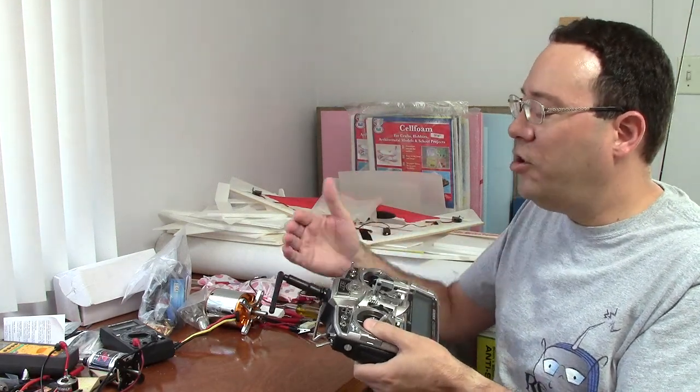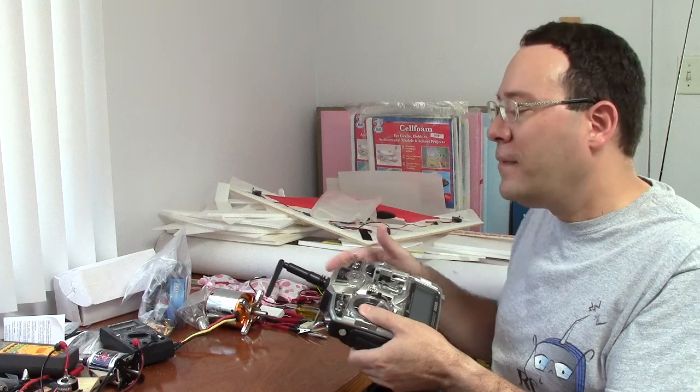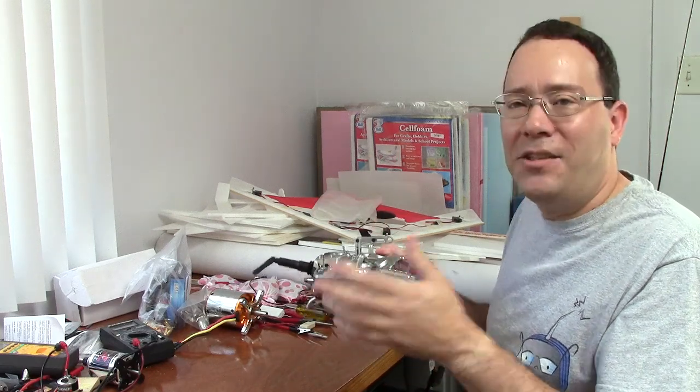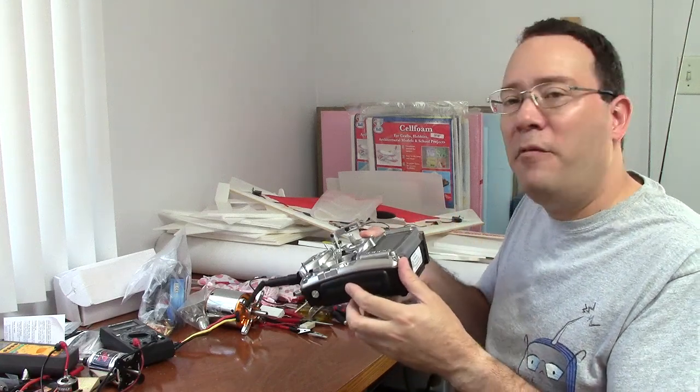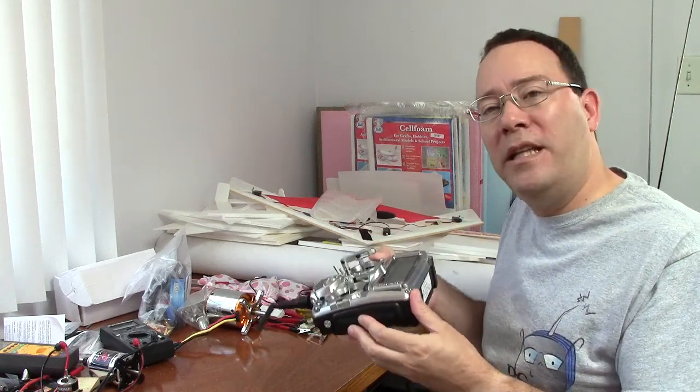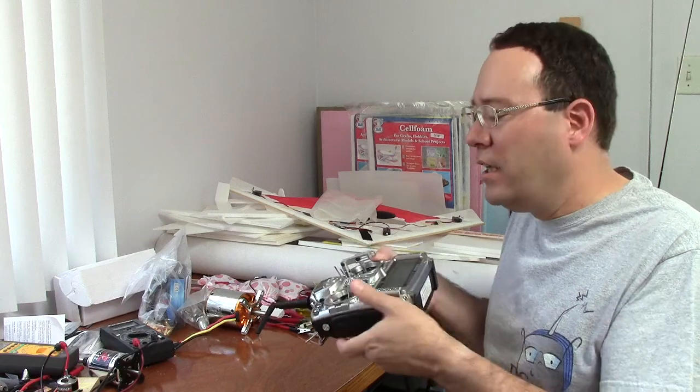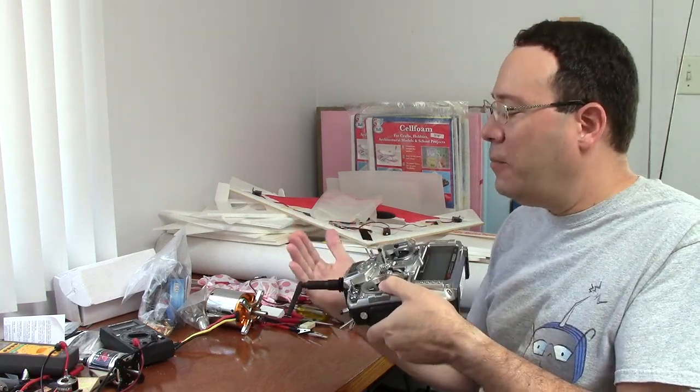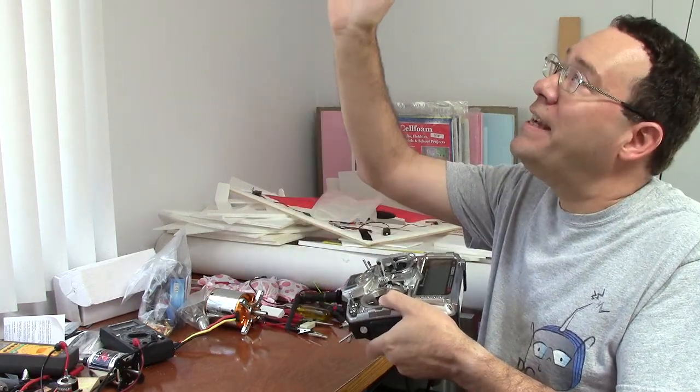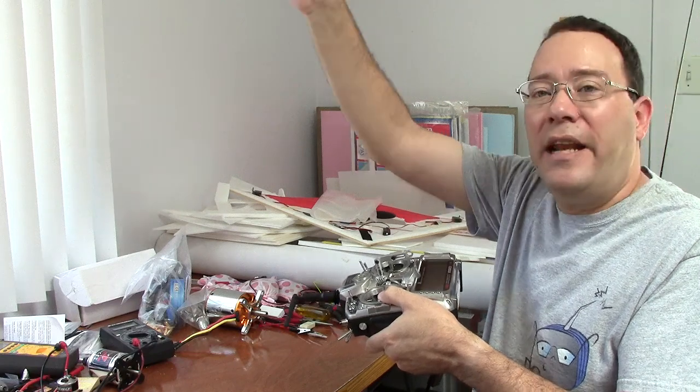But the other bad thing to do is to have it pointing up, because the problem there has to do with how a lot of us fly. We probably don't even think about it, but when we fly, a lot of the time we end up holding the transmitter down, so the antenna easily ends up pointing straight at the model.